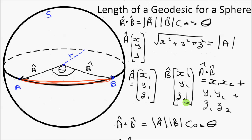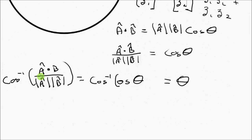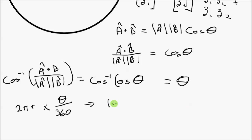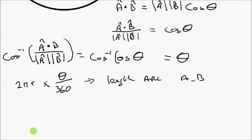As established earlier, if we find theta, we can use it as the fraction of the circumference of the circle to find the arc length — the geodesic from A to B. The circumference is 2πR, and multiplying by theta over 360 gives us the length of arc AB. That is known as the geodesic of the sphere.